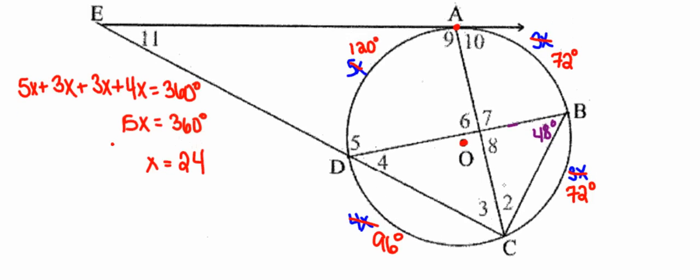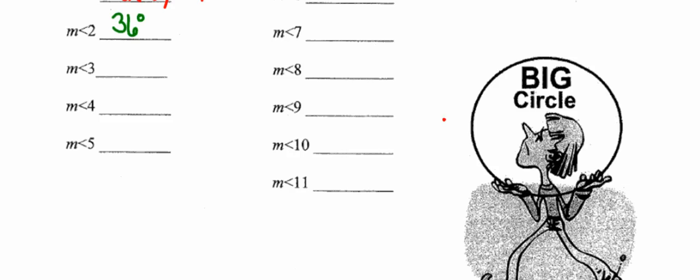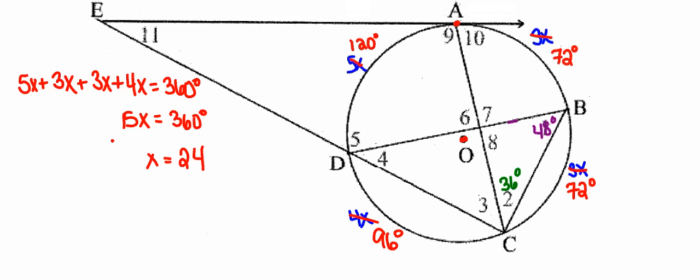I'm also going to label angle 2 in the picture because it might help find other angles. In fact, I can see a triangle in the picture. The sum of the three angles in that triangle must total 180 degrees. I know two of the three angles — 36 and 48 — so I can find angle 8 by subtracting their sum from 180. The measure of angle 8 is 96 degrees. I'll label that in the diagram.